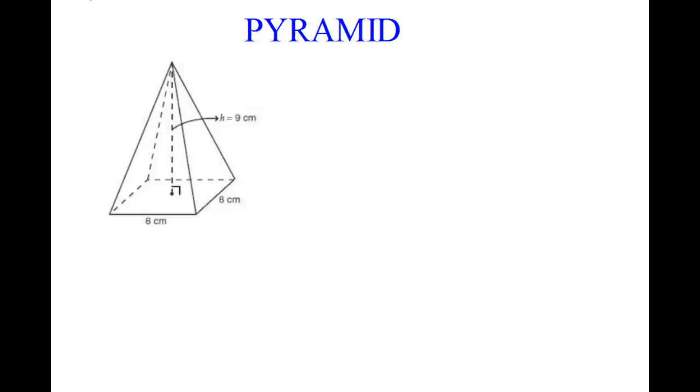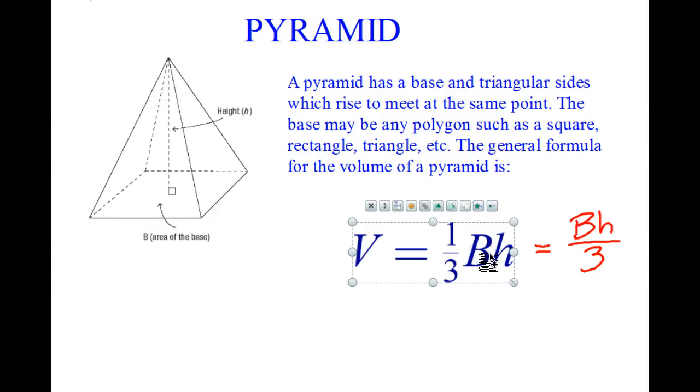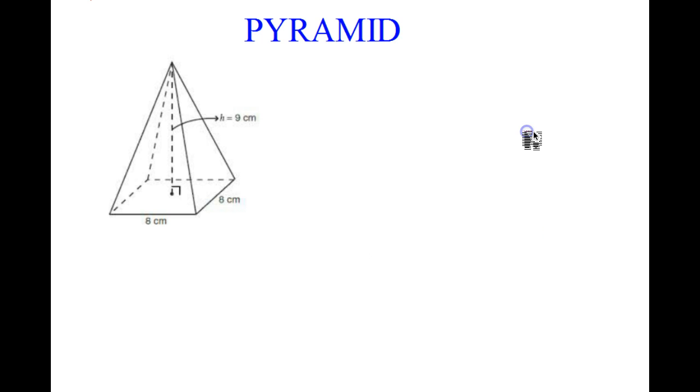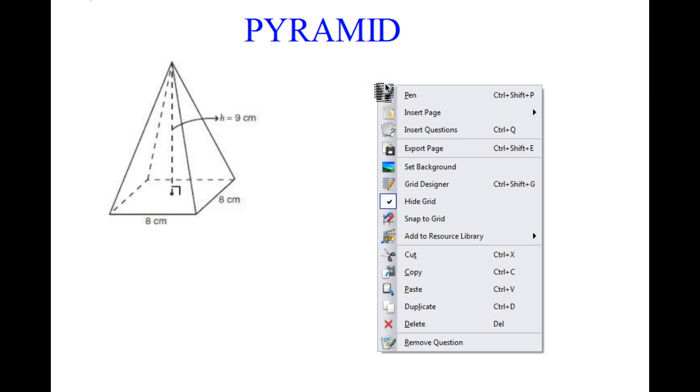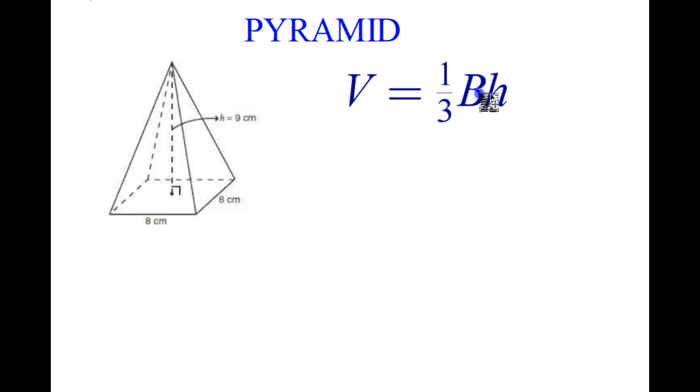All right. Well, hopefully you had a chance to do that. Let me jump back to this page real quick, and I'm going to copy this formula, and then we'll paste it on in here. And so we have volume is one-third of the area of the base times height. So in this case, we have one-third of, well, the base here is a square, 8 times 8, so we're going to get 8 squared multiplied by the height, which is 9. And we're going to use this idea and we'll just go ahead and simplify.